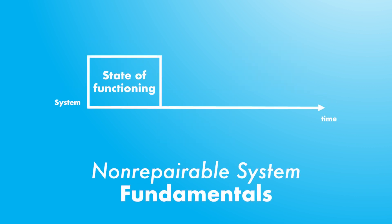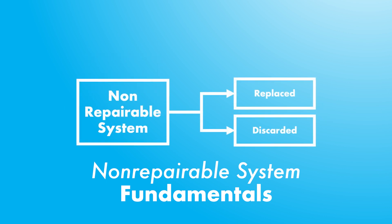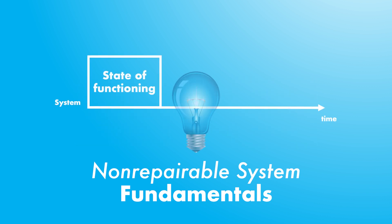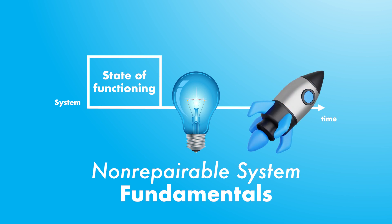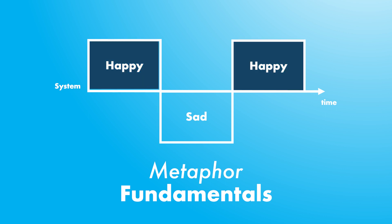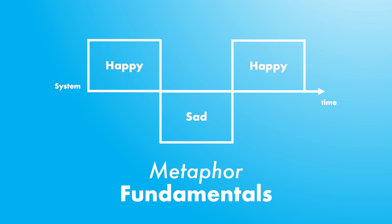Non-repairable systems have a single state of functioning because once a failure occurs, they cannot enter a state of failure — they are either totally discarded or replaced by a new system. Examples of non-repairable systems are light bulbs or rockets. A system's behavior can be seen like a person's emotions: when in a happy state — state of functioning — we work efficiently and contribute to operation success; but when sad — in a state of failure — we are unable to function, causing disruptions and added costs.